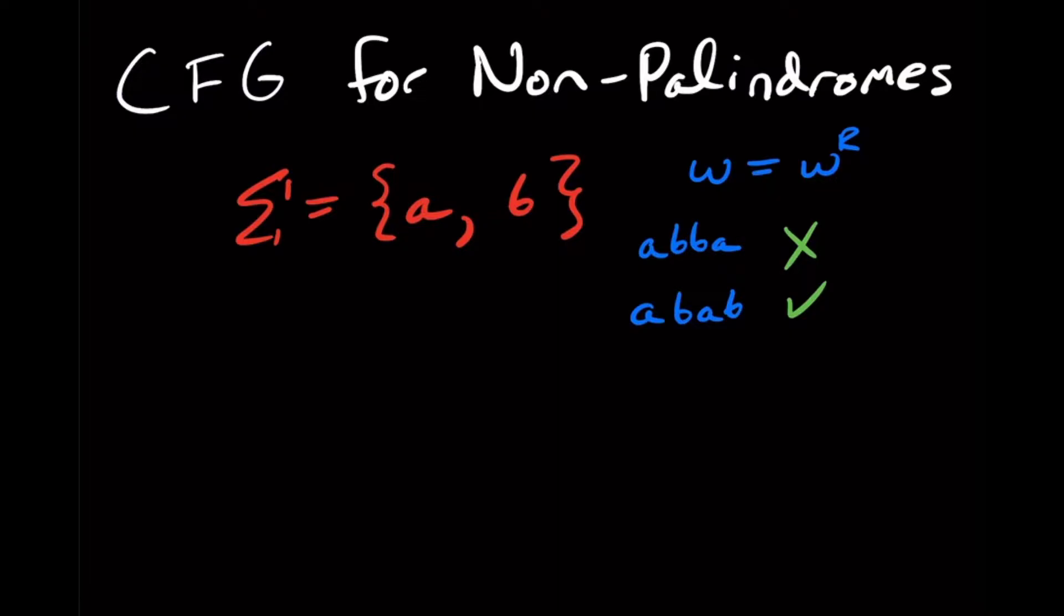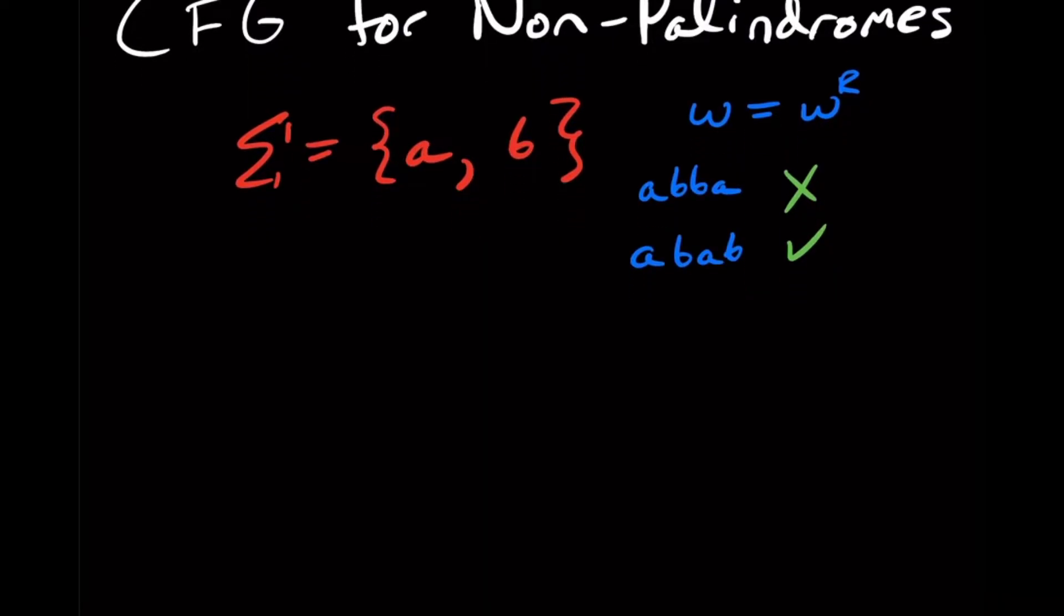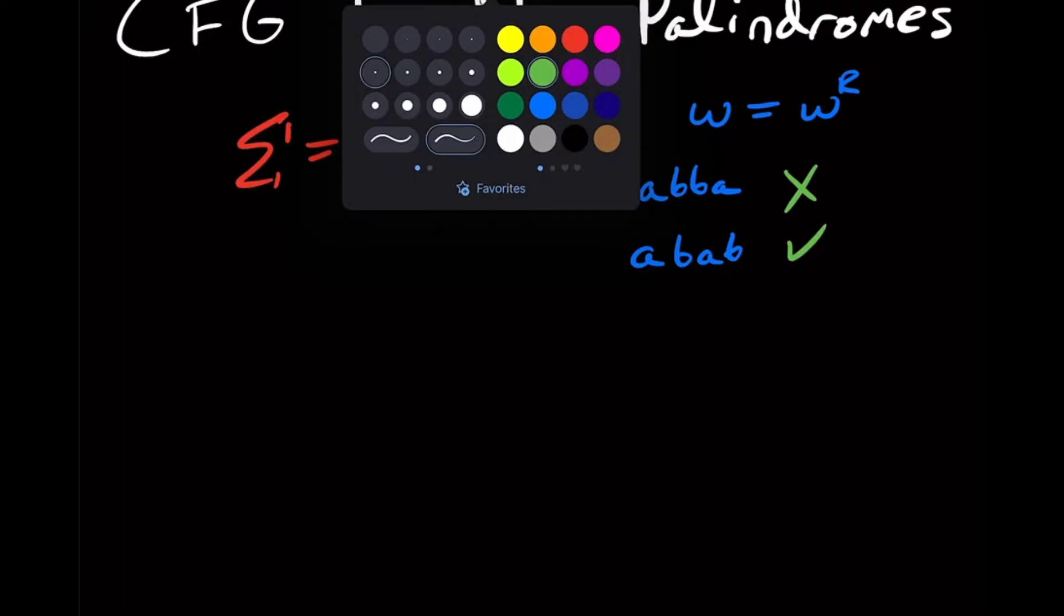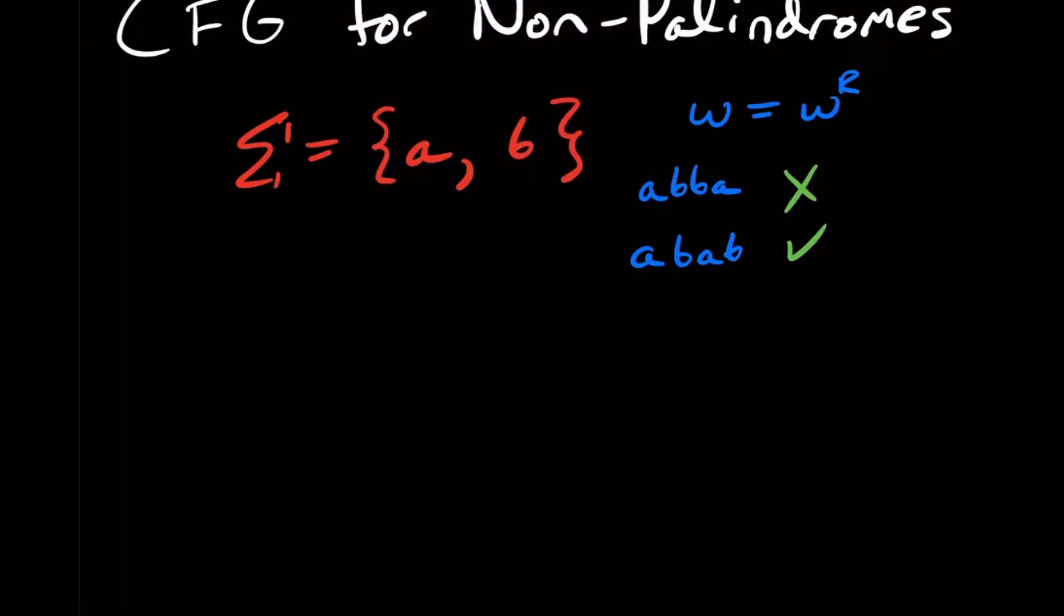So what does it mean for a context-free grammar to generate the string of all strings that are not palindromes? Well, the thing is that if we look at a particular string, let's say that we have some stuff, and then let's say an A appears, then because it's a non-palindrome, it must match with a B somewhere. So this must match with a B.